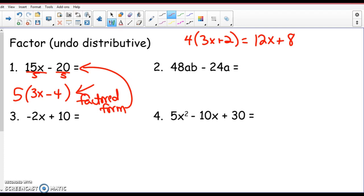Alright, look at number 2. What is the greatest common factor there? I agree with 24. Is there anything else that is a greatest common factor for 48AB and 24A? 24 is the number. Look at the variables. 24A. Don't both of these terms contain an A? So that is a greatest common factor. They both contain an A.